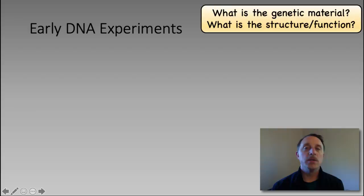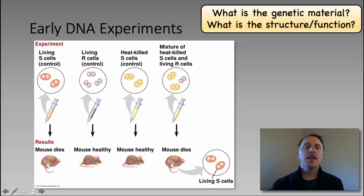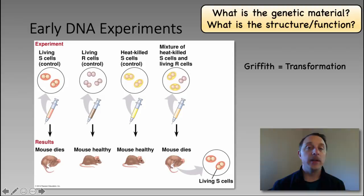The two big questions these experiments were attempting to answer were: one, what is the genetic material — is it DNA or is it protein? Those were the two major hypotheses at the time. And once that first question was answered, the next question was what does this genetic material look like, what is its structure, and how does it function? There were a few early experiments that are important here. The first one, in the early 1900s, was performed by Griffith, and this led to his discovery of the transformation principle — that this genetic material could be used to change the phenotype of an organism.